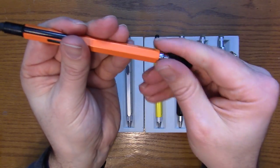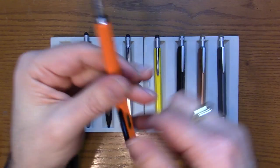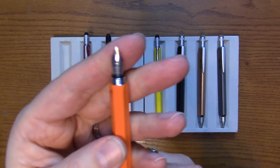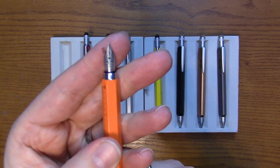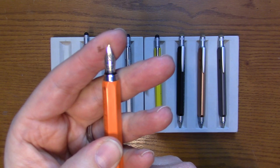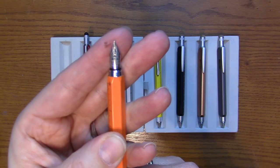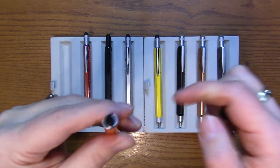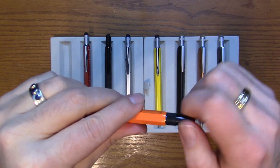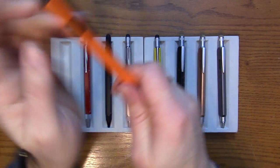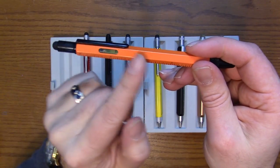On the fountain pen you unscrew the cap and we've got a steel nib. Iridium point Germany on it. Pretty much medium nib width on this. And cartridge only pen because of the design of the pen and the level.